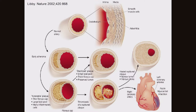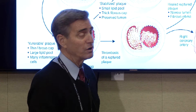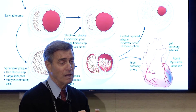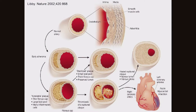When the fibrous cap ruptures, blood mixes with the necrotic lipid pool and a blood clot forms. If that clot occludes the artery — closes it off — that causes a heart attack, also known as a myocardial infarction, represented by the area of heart muscle that is dying. If it's not totally occlusive — maybe it's a small clot, or aspirin reduced its size — this can heal without causing a heart attack, leaving a narrowing where the plaque ruptured.